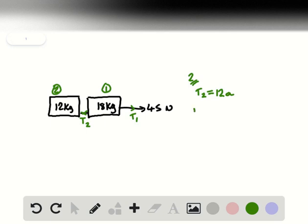And the equation for case one, we have 45, pulling us to the right, minus T2, pulling us to the left, is equal to, and this time it's 18 times the acceleration.